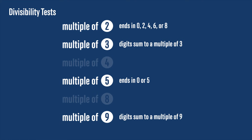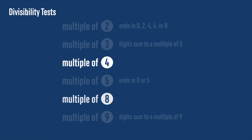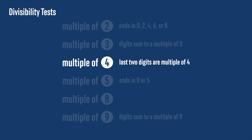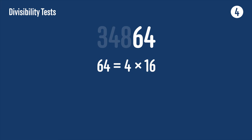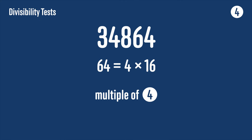So we have divisibility tests for 2, 3, 5 and 9 — the ones you'll use the most — but you'll also quite often use the tests for 4 and 8. The divisibility test for 4 says that we just need to look at the last two digits of the number and check if that's divisible by 4. For example, take the number 34,864: the last two digits are 64, and 64 = 4 × 16. So 34,864 and any other number ending in 64 must be a multiple of 4.